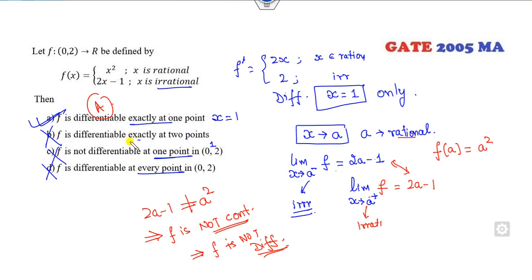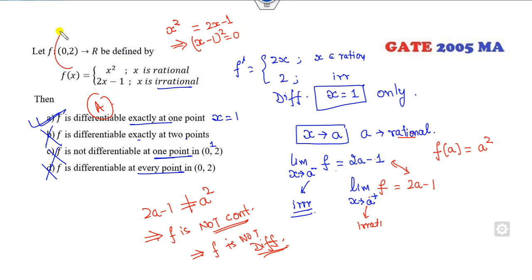If asked about continuity for this rational/irrational function: the function is continuous only when x²=2x-1, i.e., x²-2x+1=0, giving (x-1)²=0, so x=1. Continuity and differentiability both hold only at x=1.